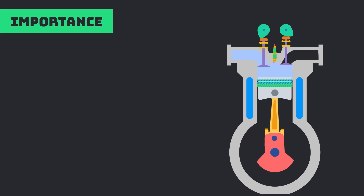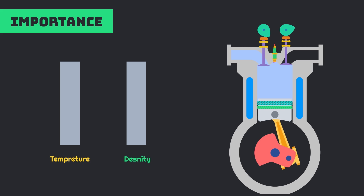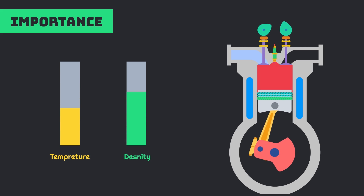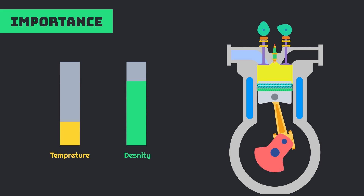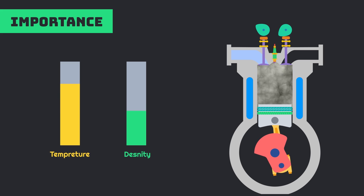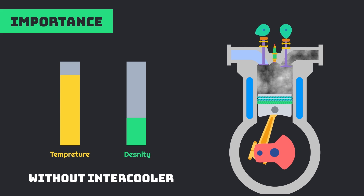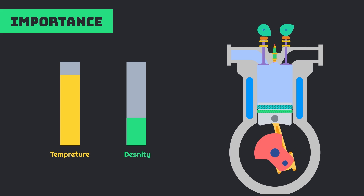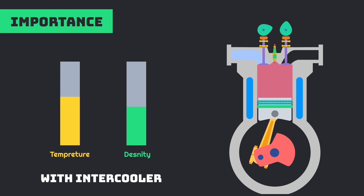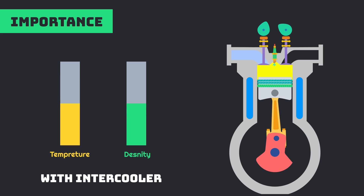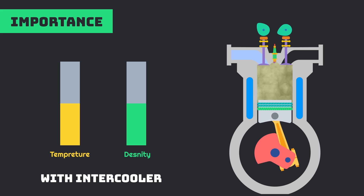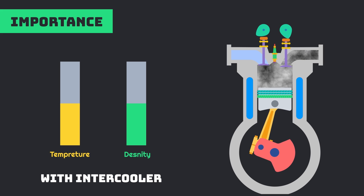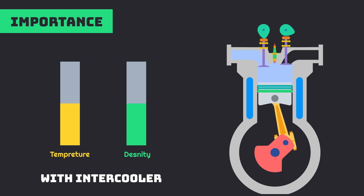On the other side, the density of air is inversely proportional to the air temperature, which means density of air inside the combustion chamber decreases drastically, which reduces engine performance and efficiency. Intercooler reduces the temperature of intake air, which results in denser air intake, which increases the volumetric efficiency of the engine, allowing the fuel to burn more efficiently and effectively.